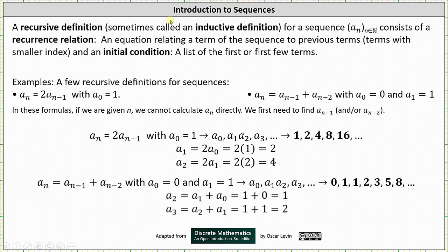A recursive definition — sometimes called an inductive definition — for a sequence a sub n where n is a natural number consists of a recurrence relation, which is an equation relating a term of the sequence to previous terms, and an initial condition, which is the list of the first or first few terms. Here are two examples: a sub n equals two times a sub (n minus one) with a sub zero equals one; and a sub n equals a sub (n minus one) plus a sub (n minus two) with a sub zero equals zero and a sub one equals one.